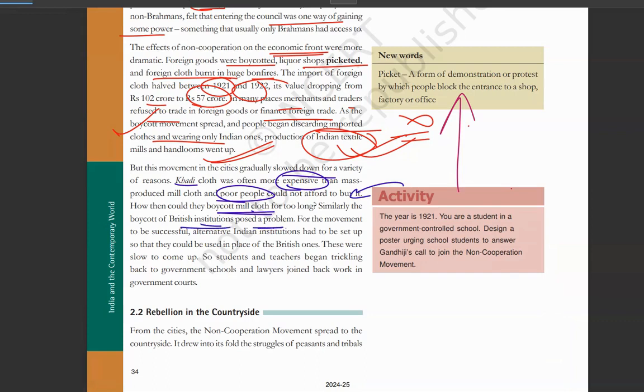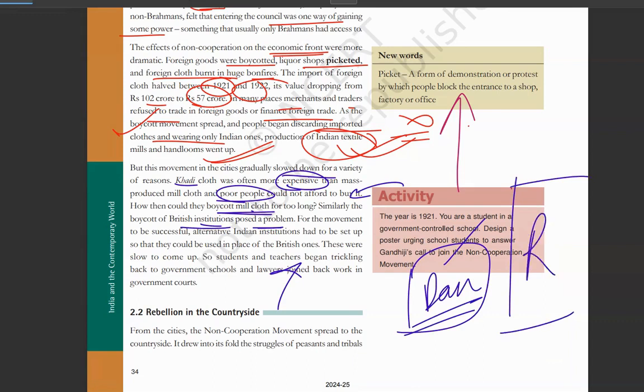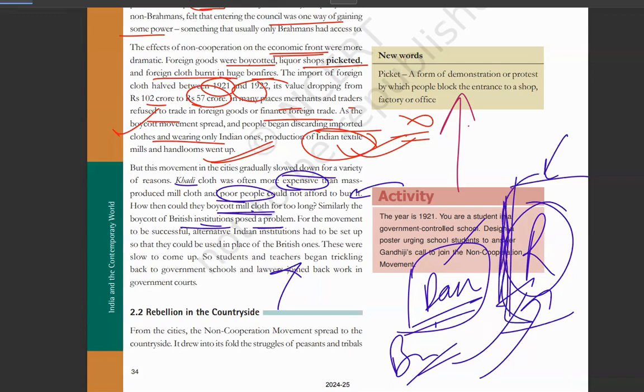In the same way, British institutions کی بھی ایک problem تھی. For the movement to be successful, alternative Indian institutions set up ہونے تھے. مان لو اگر آپ نے یہ ban کر دیا کہ ہم یہاں سے کچھ بھی نہیں خریدیں گے - تو آپ کے پاس کوئی دوسرا resource تو ہونا چاہیے. اگر آپ British کے colleges, schools کو ban کر رہے ہو, then you need alternatives - کوئی ایسا Indian government schools, colleges, jobs aur opportunities provide کرے. پر اس time پے یہ چیز exist نہیں کر رہی تھی. اسی کر کے لوگ زیادہ دیر movement کے اندر نہیں رہ پائے, انہوں نے back step کر لیا aur دوبارہ یہ ساری جگہوں کو join کر لیا.